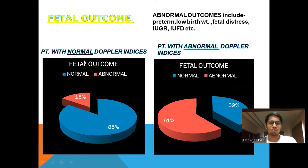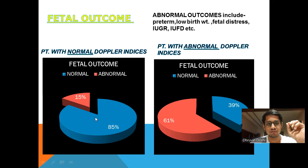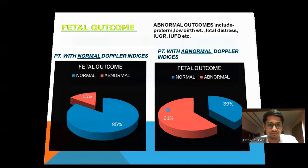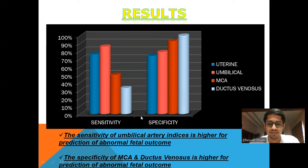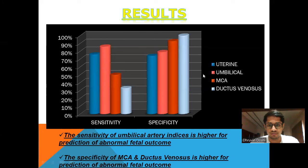On fetal outcome: with normal Dopplers on umbilical, MCA, and uterine arteries, there is a normal fetal outcome in 85% of cases. However, if any one of the indices is abnormal, there is approximately 61% abnormal outcome for the fetus. The sensitivity of umbilical artery is on the higher side — about 86% — while the specificity of MCA and ductal stenosis is higher for prediction of abnormal fetal outcome.